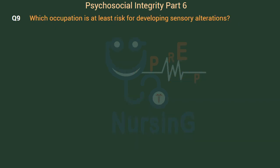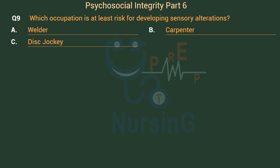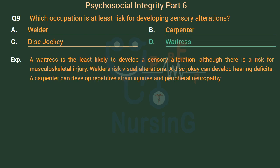Which occupation is at least risk for developing sensory alterations? Option A: Welder. Option B: Carpenter. Option C: Disc Jockey. Option D: Waitress. The right answer is Option D — Waitress. A waitress is the least likely to develop a sensory alteration, although there is a risk for musculoskeletal injury. Welders risk visual alterations. A disc jockey can develop hearing deficits. A carpenter can develop repetitive strain injuries and peripheral neuropathy.